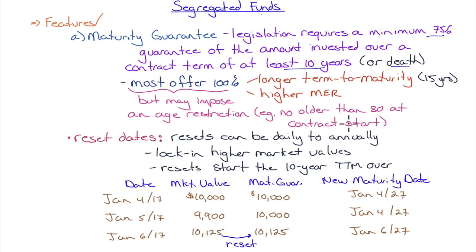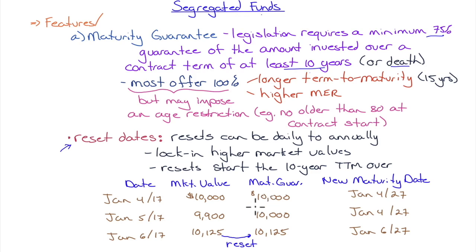Reset dates: resets can occur daily to annually and lock in higher market values. Importantly, resets restart the 10-year clock to maturity. Example: on January 4th you contribute $10,000. Market value is $10,000 and maturity date is January 4th, 2027. On January 5th the market value drops to $9,900 but your maturity guarantee is still $10,000. On January 6th the market value rises to $10,125 — you can reset and lock that in as your new maturity guarantee.